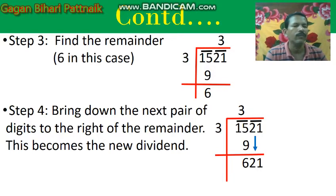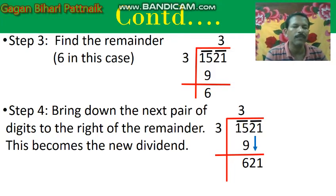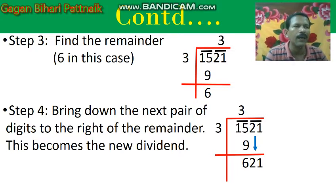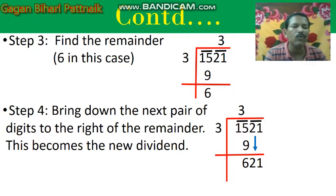Then we will go to step 4. In step 4, bring down the next pair of digits to the right of the remainder — this becomes the new dividend. The next pair of digits is 21. You will drop down the pair, not a single number. You will drop the pair. Your next pair is 21. You will write it to the right of 6. Now it becomes 621, and it is the new dividend.